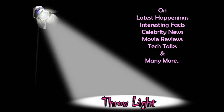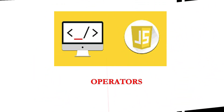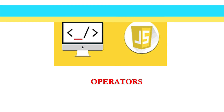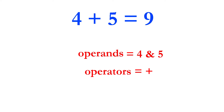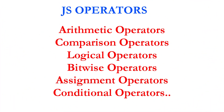Hello viewers, welcome to our channel Trollite. In this video we are going to learn about operators in JavaScript. Let us take a simple expression: 4 plus 5, which is equal to 9. Here 4 and 5 are called operands and plus is called the operator. JavaScript supports different types of operators like arithmetic operators, comparison operators, logical operators, etc.